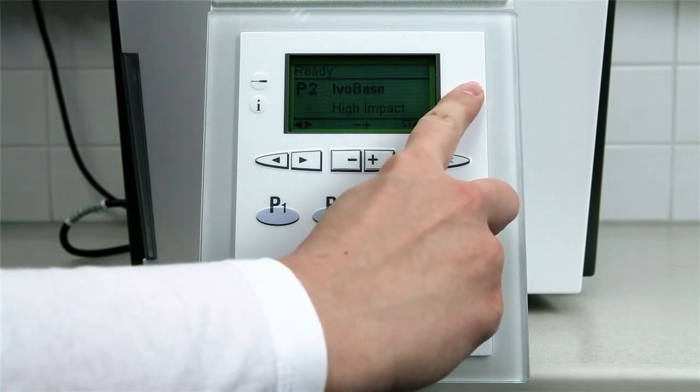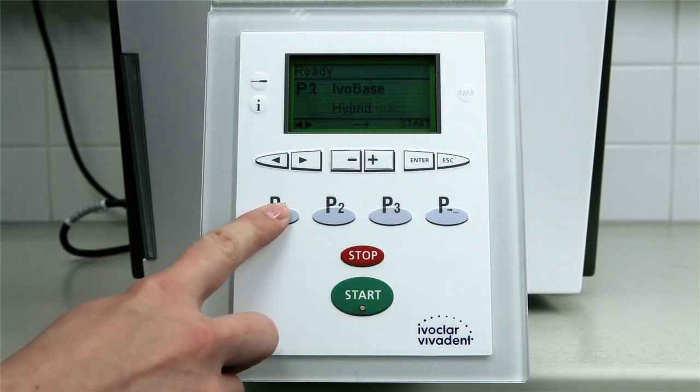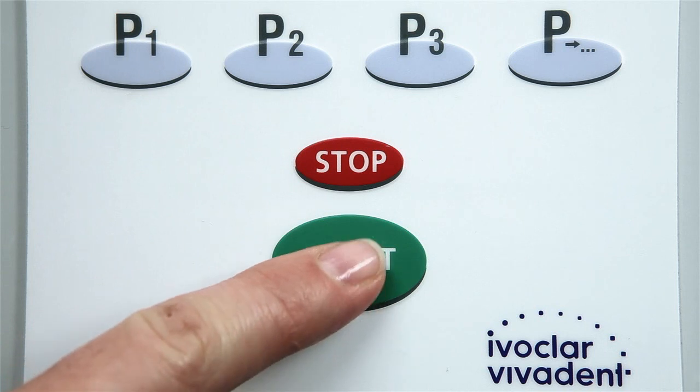To further reduce the residual monomer content, the optional RMR key can be activated. Select the corresponding program and start the program.